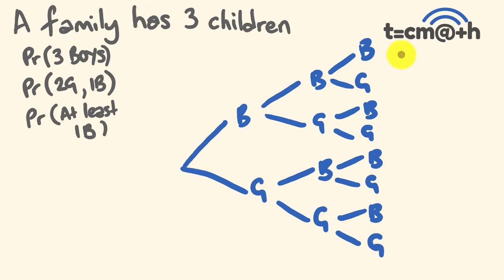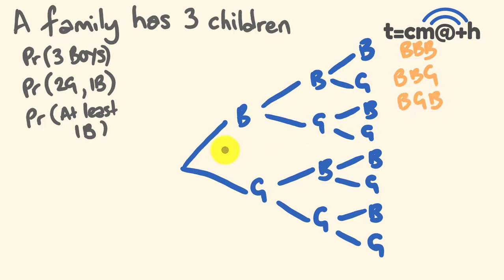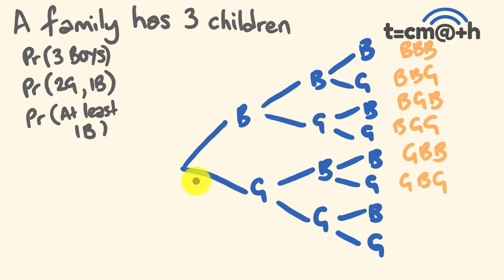Now let's list out all the possibilities: boy-boy-boy, boy-boy-girl, boy-girl-boy, boy-girl-girl, girl-boy-boy, girl-boy-girl, girl-girl-boy, or girl-girl-girl. That gives us eight possible outcomes altogether.